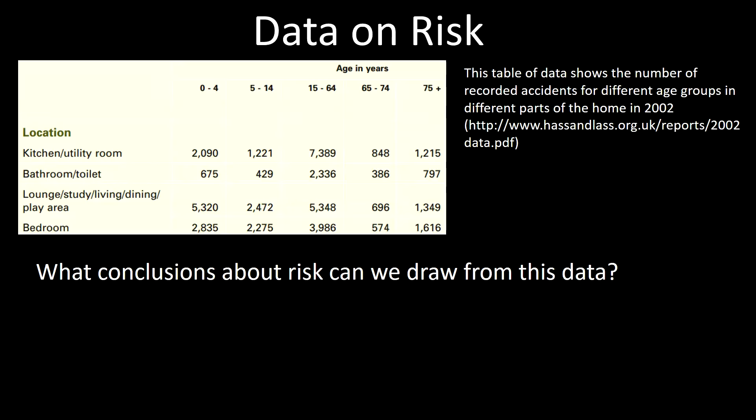You're often asked to interpret data on risk, and it's very important to make sure that you're comparing like for like, and that you have a clear idea of what the data says. This data is taken from some surveys about accidents in the home in 2002, presenting the location in the home down the left-hand side, and the age range of the person involved across the top in different columns.